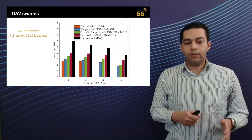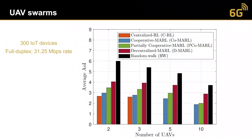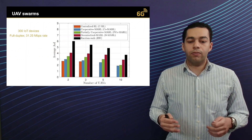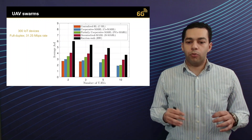The results show that centralized reinforcement learning provides the best performance, but it is not able to scale to a higher number of UAVs — beyond 3 UAVs, for example 5 or 10 in a UAV swarm, centralized RL cannot be applied. The best performer among the scalable approaches is the cooperative multi-agent reinforcement learning, which provides the lowest age of information compared to other multi-agent RL variants. These results are taken for 300 devices deployed in the map with 5 or 10 UAVs collecting information from these devices.